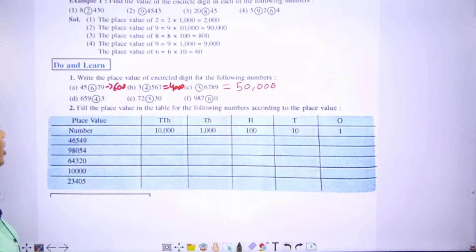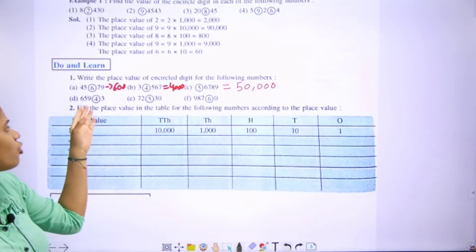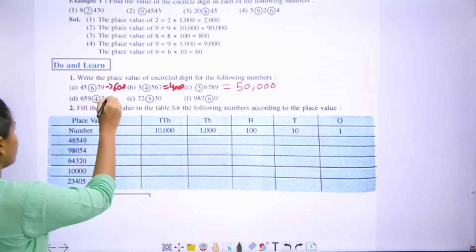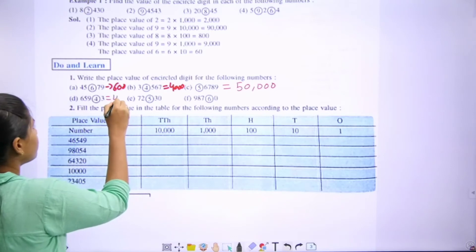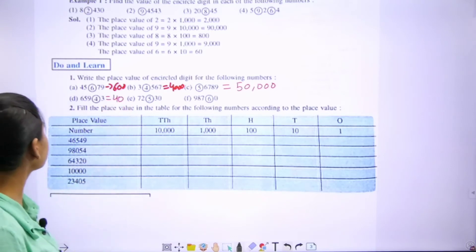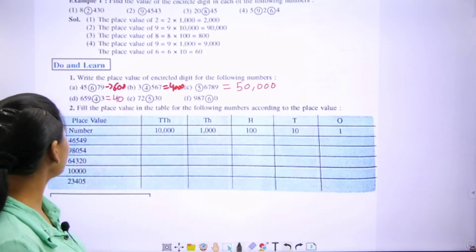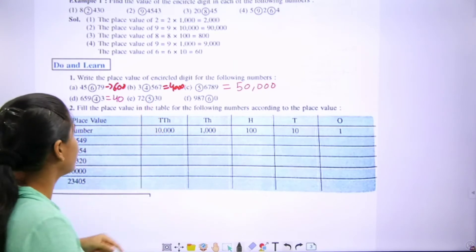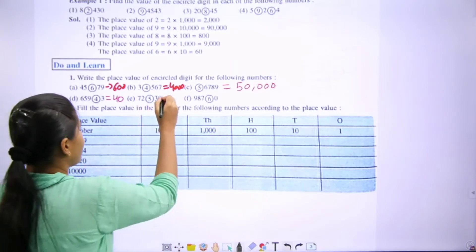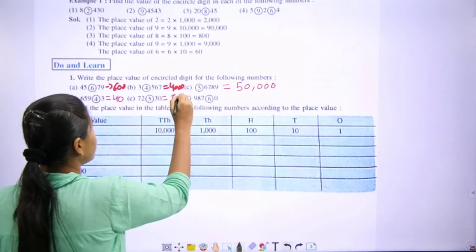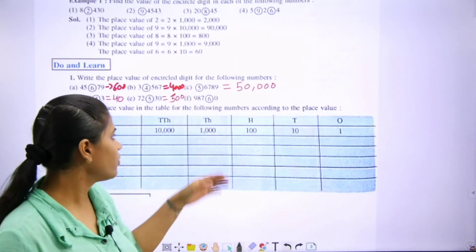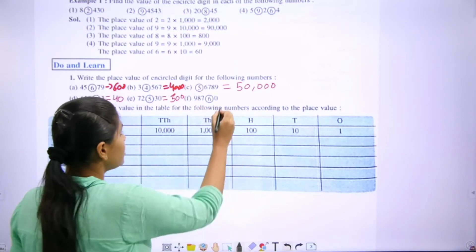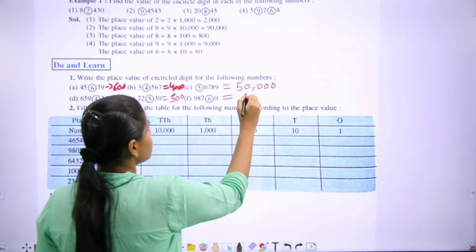Next: we have to tell the place value of four — ones, tens — the answer is forty. Next: we have to tell the place value of five — ones, tens, hundred — the answer is five hundred. Next: we have to tell the place value of six — that is sixty.